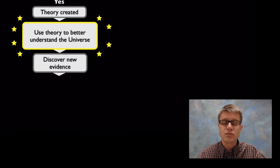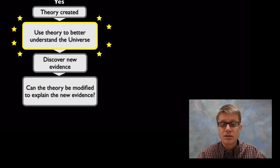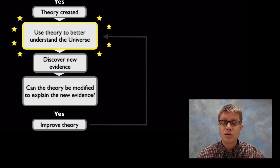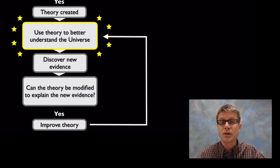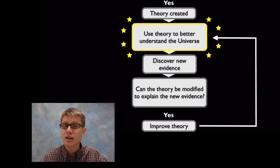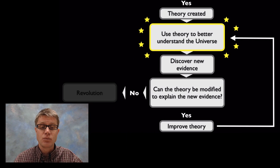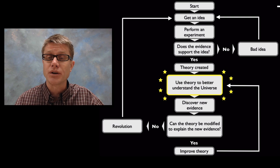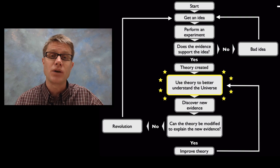What do you do next? Well you discover new evidence. And if that evidence can be used to modify our theory to explain the new evidence, then we improve the theory. And we have a better theory. And so the theory gets better and better over time. So we've got this feedback loop. But occasionally we'll come up with new evidence that can't modify our theory. And so we have something called a scientific revolution. So we have to start over again. And we have to come up with a brand new idea.